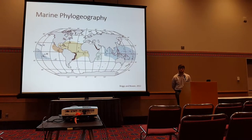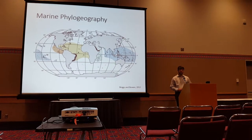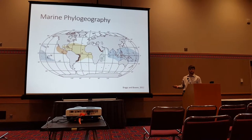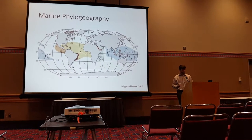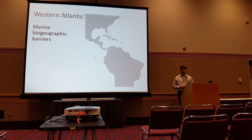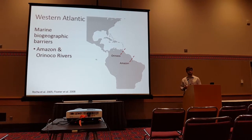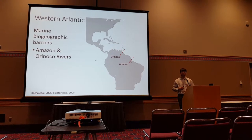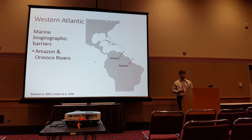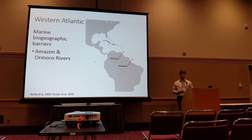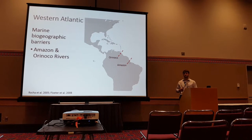Populations in the marine realm were thought to be connected over vast geographic distances, but we now know that there are actually many biogeographic barriers in marine biogeography that separate these populations. Looking within the western Atlantic, there are actually several biogeographic barriers, with the largest one being the combined outflow of the Amazon and Orinoco rivers, which together let out approximately 300,000 cubic meters of fresh water every second. This immense plume of fresh water and sediment is known to inhibit gene flow between the Brazilian and Caribbean provinces.